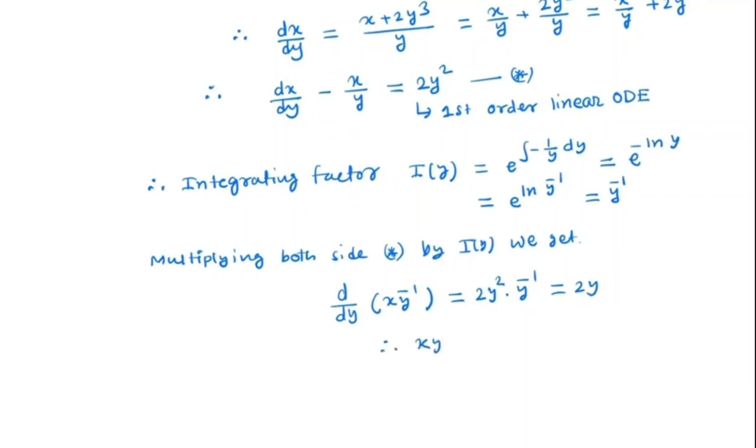So we have x·y⁻¹ = ∫2y dy + c, which is nothing but y² + c. So x = y³ + cy.